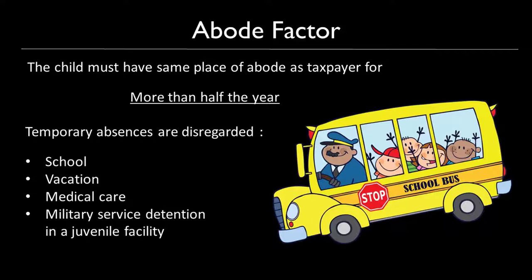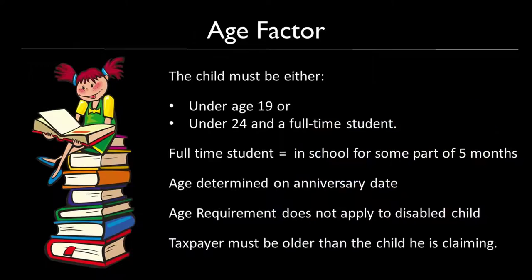The abode test is that the child must have lived with you for more than half the year. Temporary absences are disregarded. These temporary absences include school, vacation, medical care, or if you place your child in a juvenile facility or military service detention. That child still meets the abode test for the qualifying child dependency exemption test.